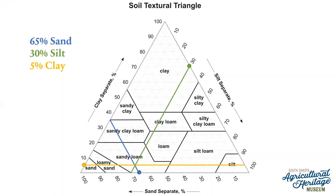Having all three lines intersect at the same point is your way to verify you've done it correctly. If your lines don't intersect at the same point, start from the beginning and redo your lines until they all come together. Also remember that your percentages must add up to 100% — 65 plus 30 plus 5 does equal 100. If you're having trouble with intersecting lines, check that your percentages sum to 100%.